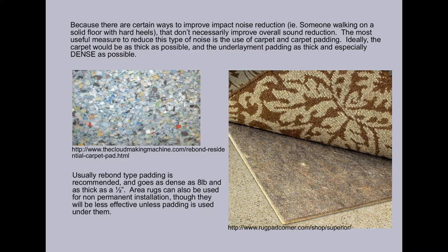The most useful measure to reduce this type of noise is the use of carpet and carpet padding. Ideally, the carpet would be as thick as possible, and the underlayment padding as thick and especially dense as possible. Usually, re-bond type padding is recommended, and goes as dense as 8 pounds and as thick as a half inch. Area rugs can also be used for non-permanent installation, though they will be less effective unless padding is used under them.